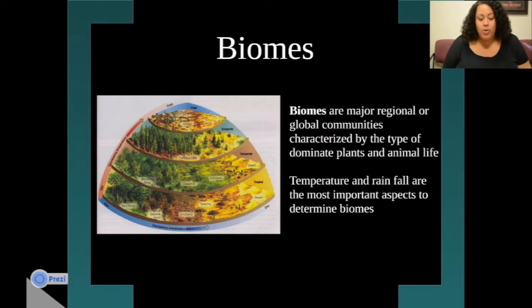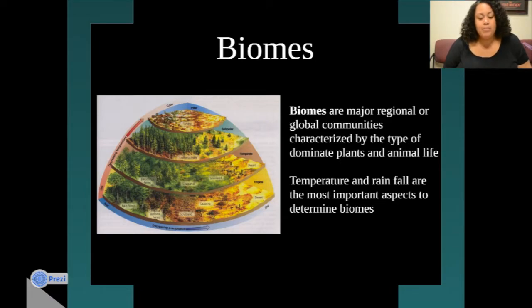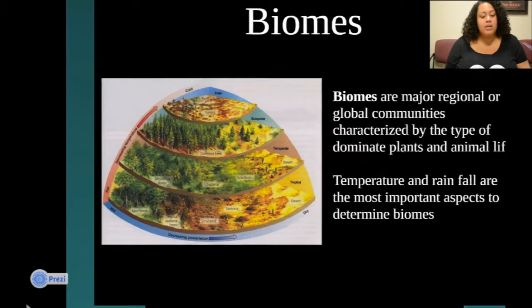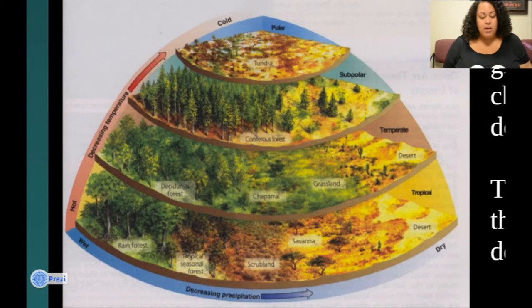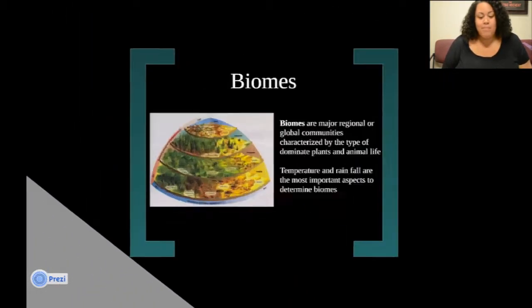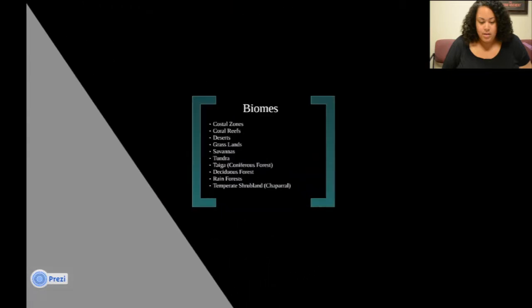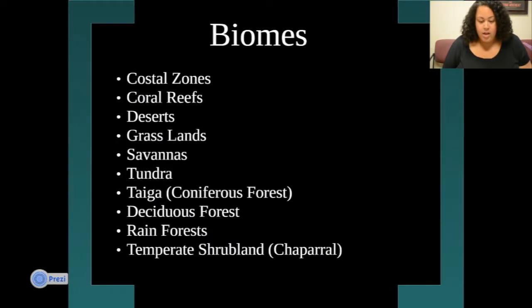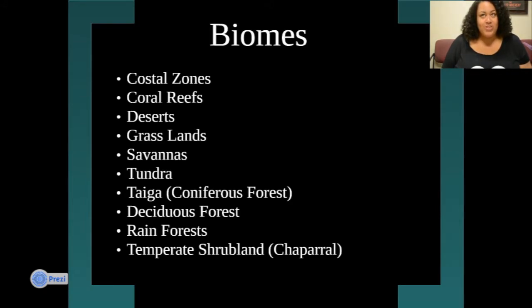Biomes are major regional or global communities characterized by the type of dominant plants and animal life. What really makes a biome a biome is the temperature and rainfall — those are the most important factors. Here are the main biomes you need to know: coastal zones, coral reefs, deserts, grasslands, savannas, tundras, coniferous forests, deciduous forests, rainforests, and temperate shrublands.